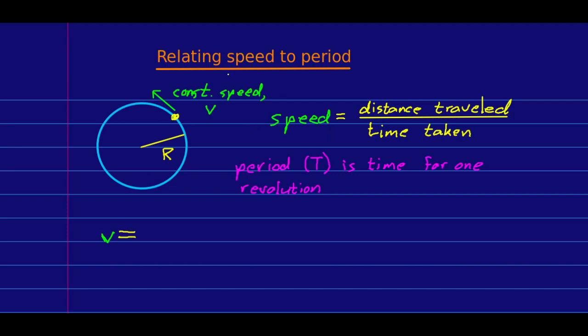Something we can do that's very useful is that we can easily relate speed to period. Speed, as always, is a distance traveled per time taken. And note that the period is the time for one revolution. So if some object is going at a constant speed around a circle, then in one period it goes a distance that is equal to the circumference of the circle. And so that's just 2πr over the period. And there we have a direct relationship between speed and period. And note that the period is 1 over the frequency. And so we can also write this as 2πr times the frequency.